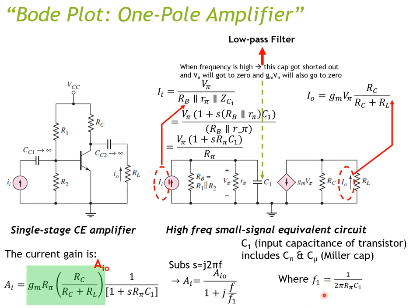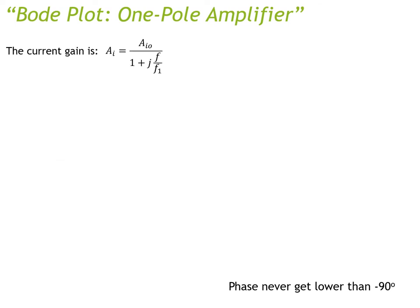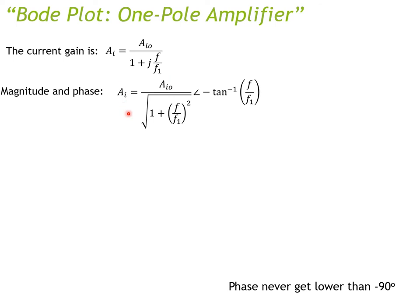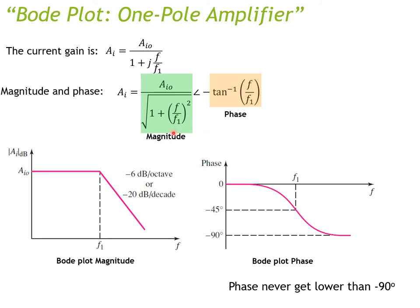The pole frequency is f₁ = 1/(2π·R_π·C₁). We can break the gain into magnitude and phase: the magnitude is A_{i0} / √(1 + (f/f₁)²), and the phase is −arctan(f/f₁).